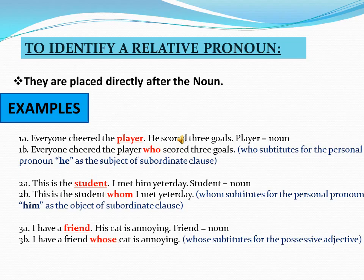Example two A: 'This is the student. I met him yesterday.' Here, 'student' is a noun. In sentence two B: 'This is the student whom I met yesterday.' So 'whom' substitutes for the personal pronoun 'him' as the object of the clause. You can see that 'him' is the object in sentence two A.